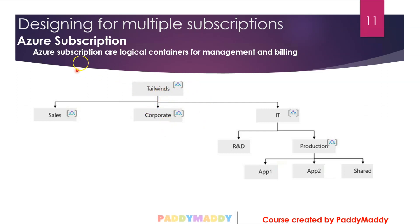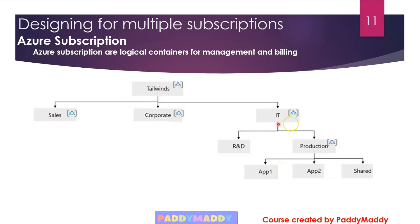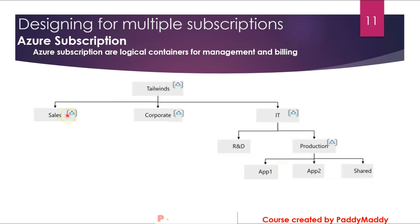We'll take the same company, Tailwind Corporation, which wanted to grow with their subscriptions based on their business. Tailwind has Sales, Corporate, and IT departments. Within IT, they have R&D and Production, and within Production there are Application One, Application Two, and some shared applications. You could apply quotas and monitor costs based on your applications or resources — that's where subscriptions come into the picture.